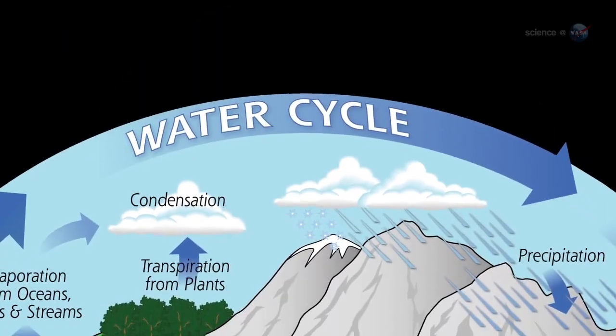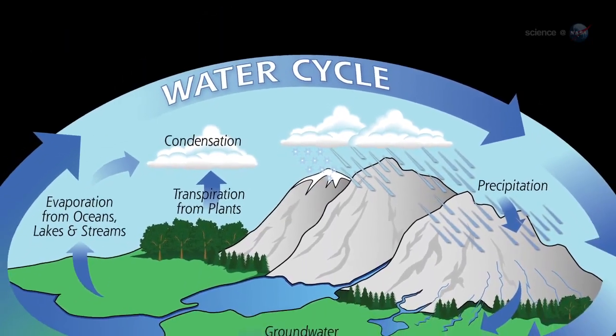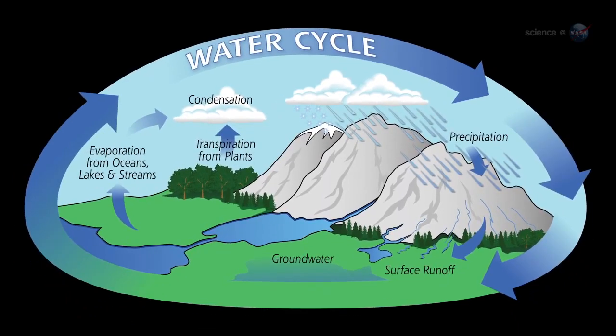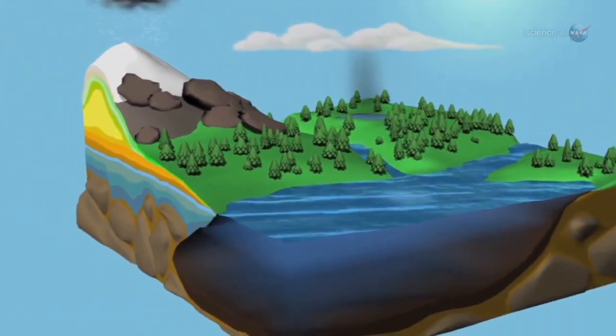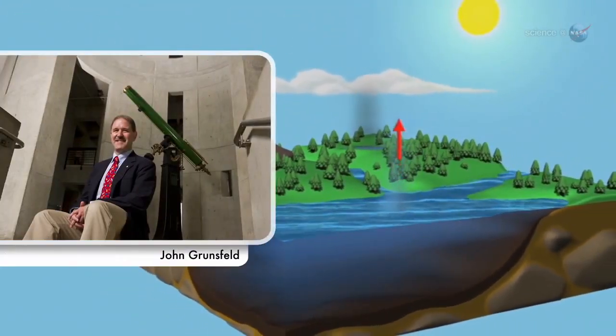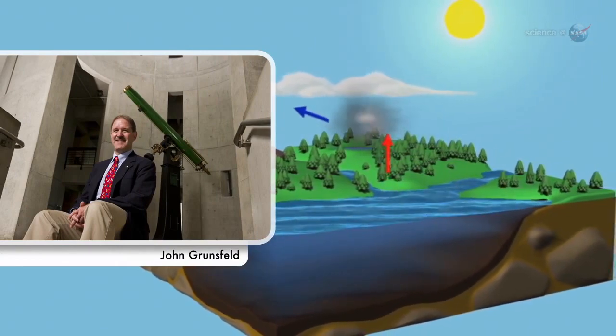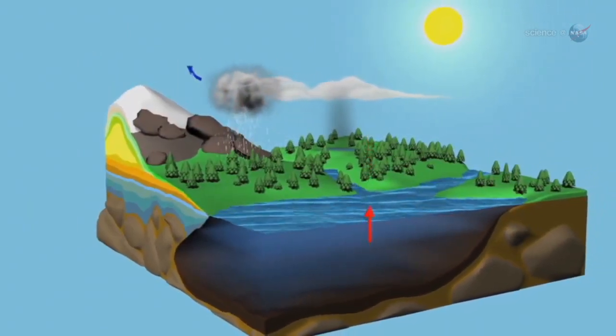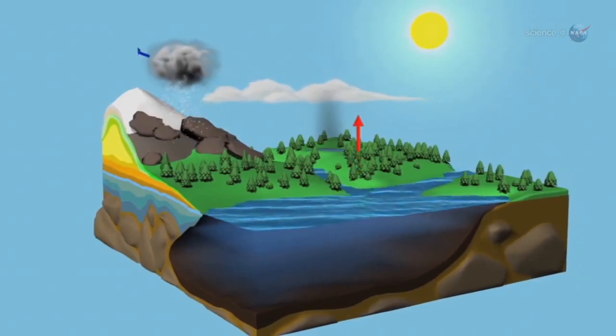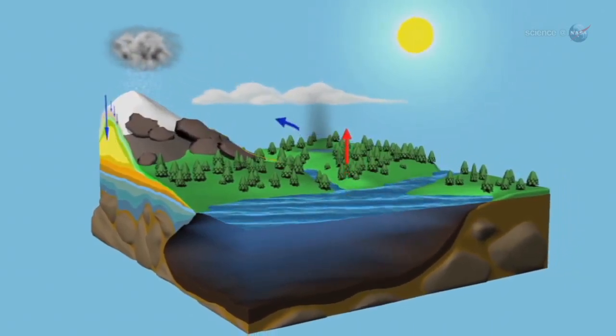The water cycle, so familiar to all school-age young scientists, is one of the most dynamic and important elements in our studies of Earth, says John Grunsfeld, Associate Administrator for NASA's Science Mission Directorate in Washington, D.C.